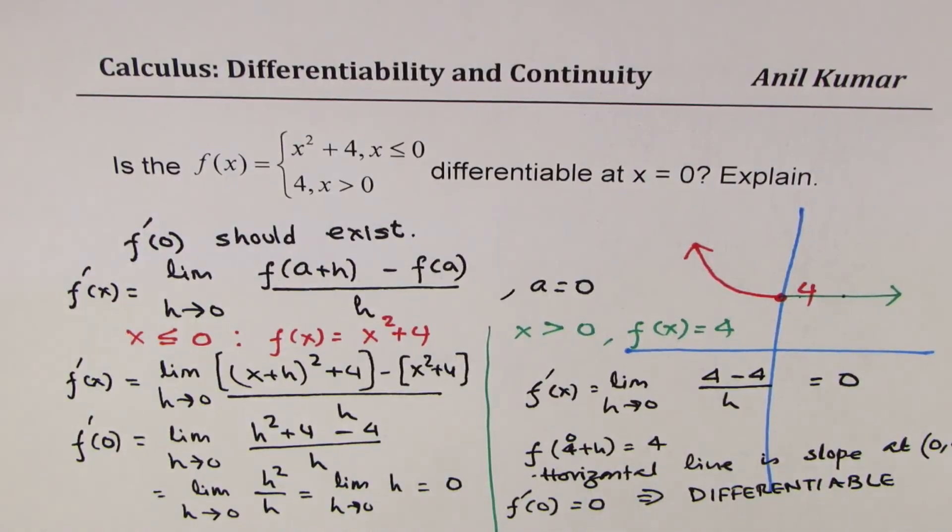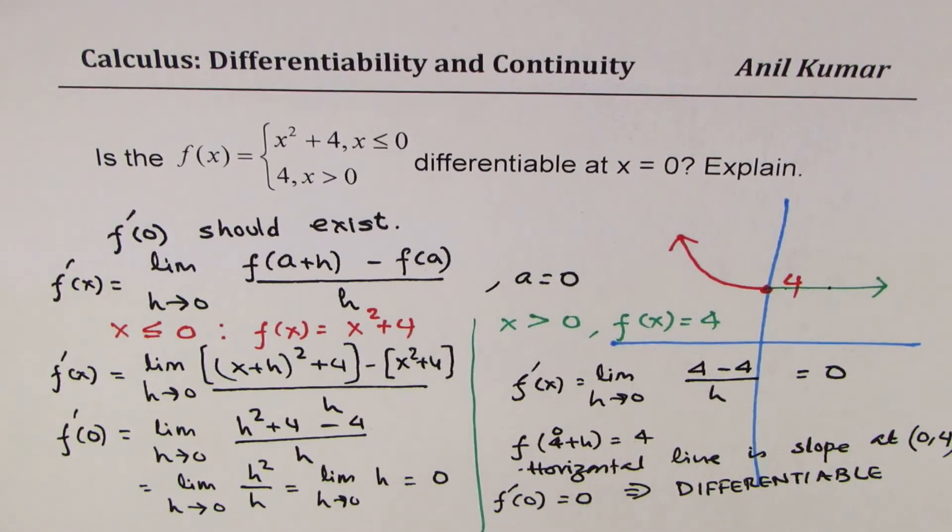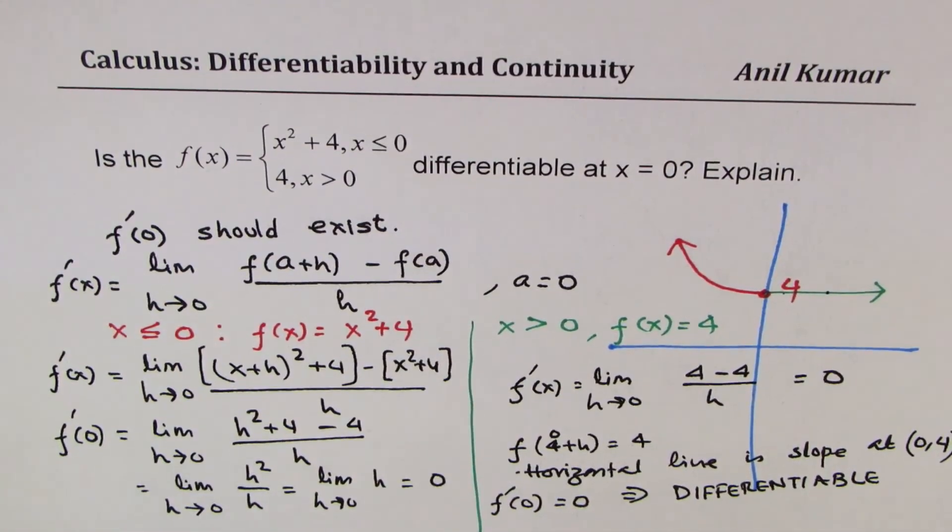So that is how you can show whether a function is differentiable or not at a point. So the important thing is, you should show that from both the sides, you get the same derivative of the function. I hope you understand and appreciate the process. Feel free to write your comments and share your views, and if you like and subscribe to my videos, that'd be great. Thanks for watching and all the best.